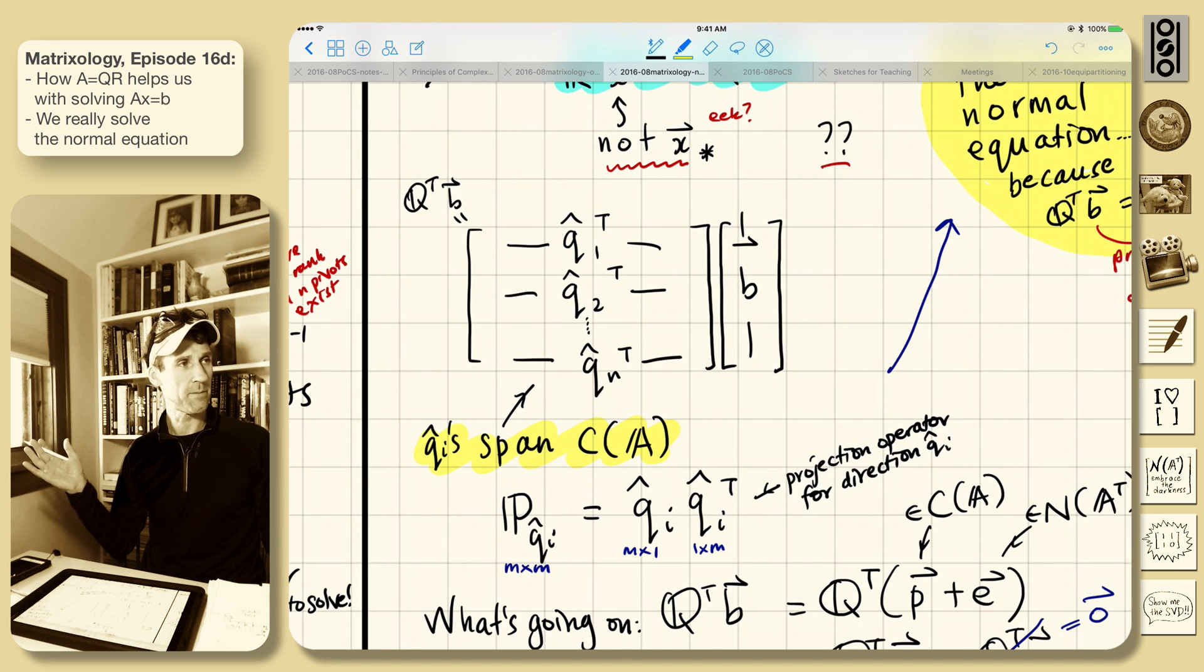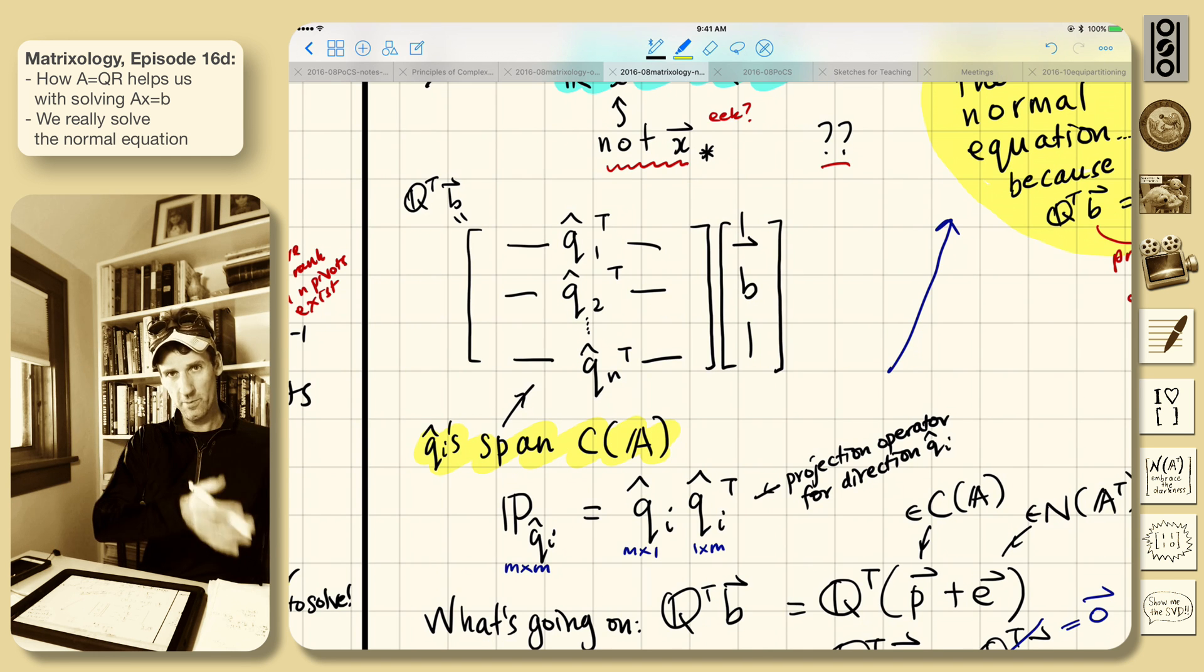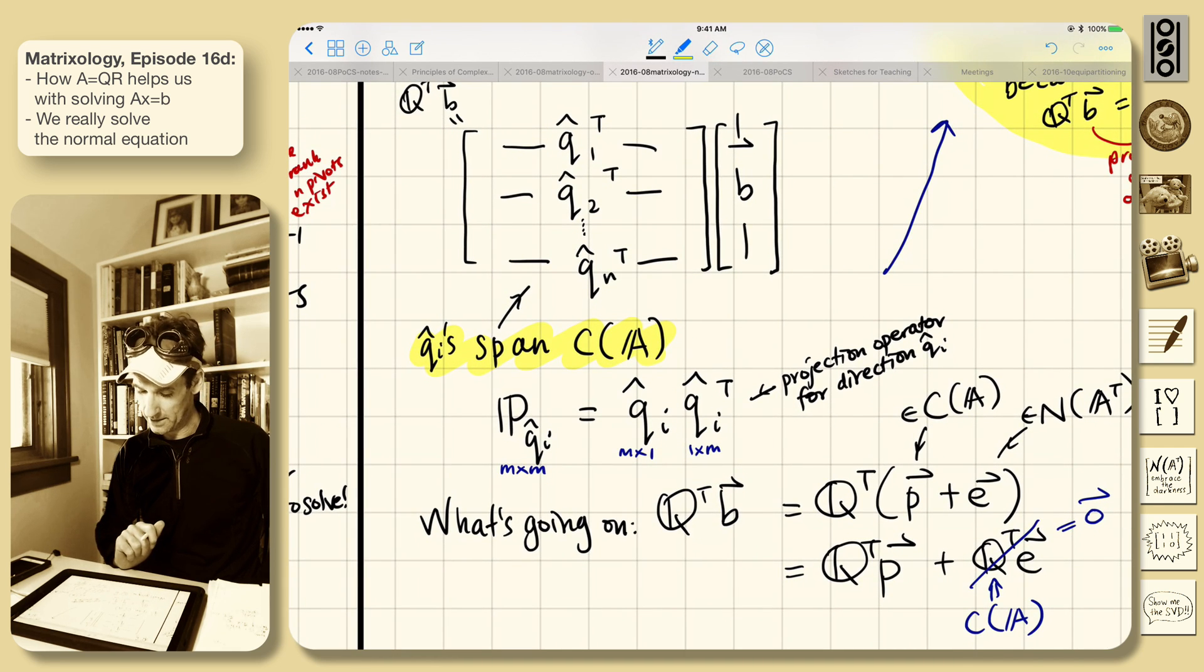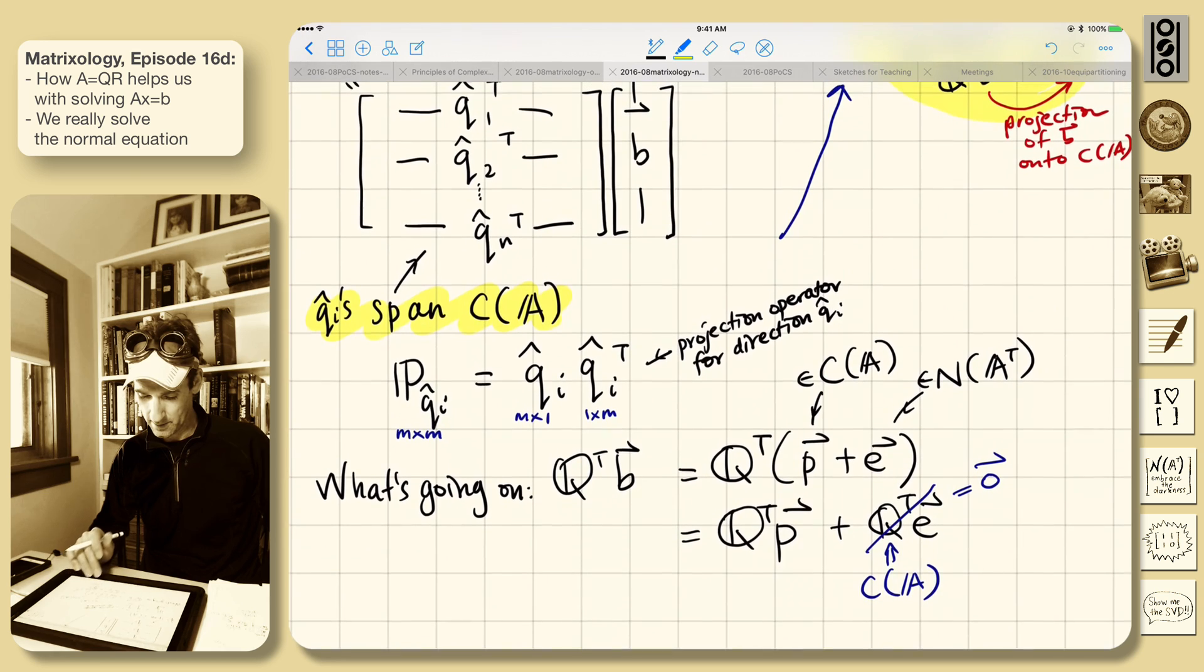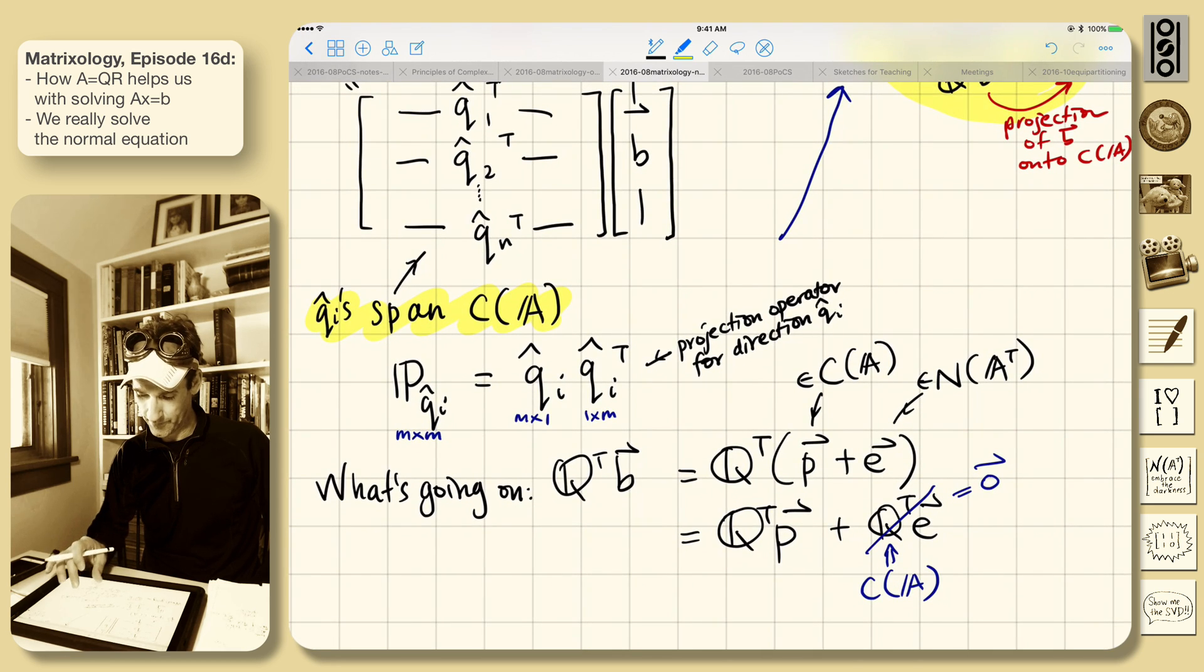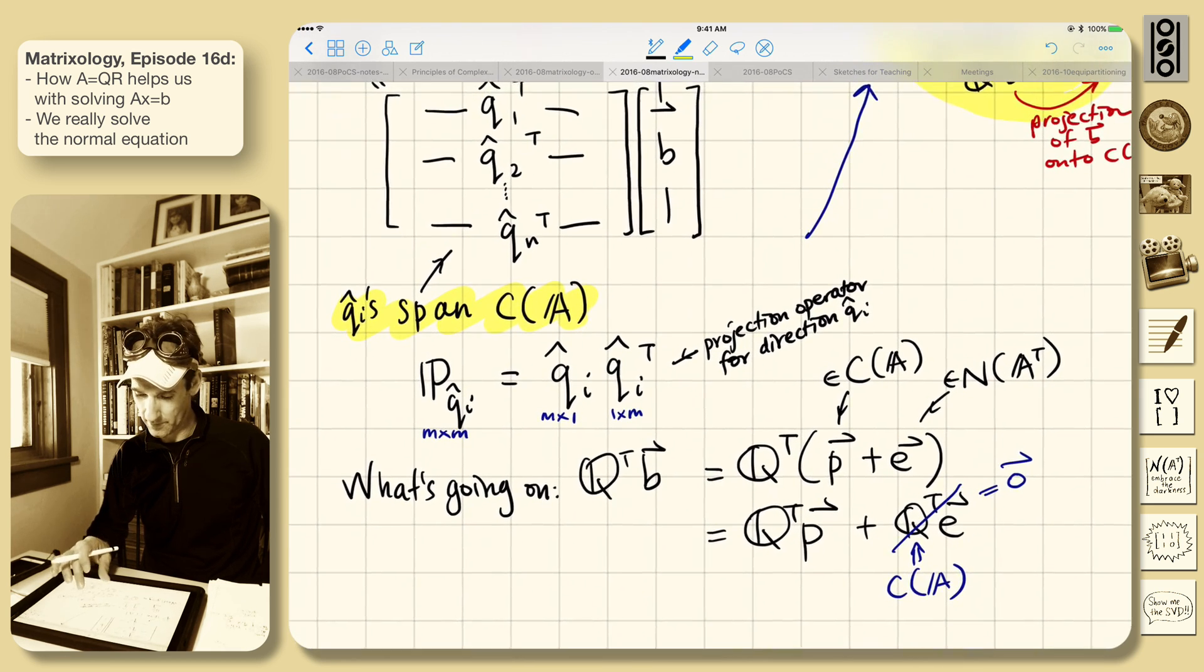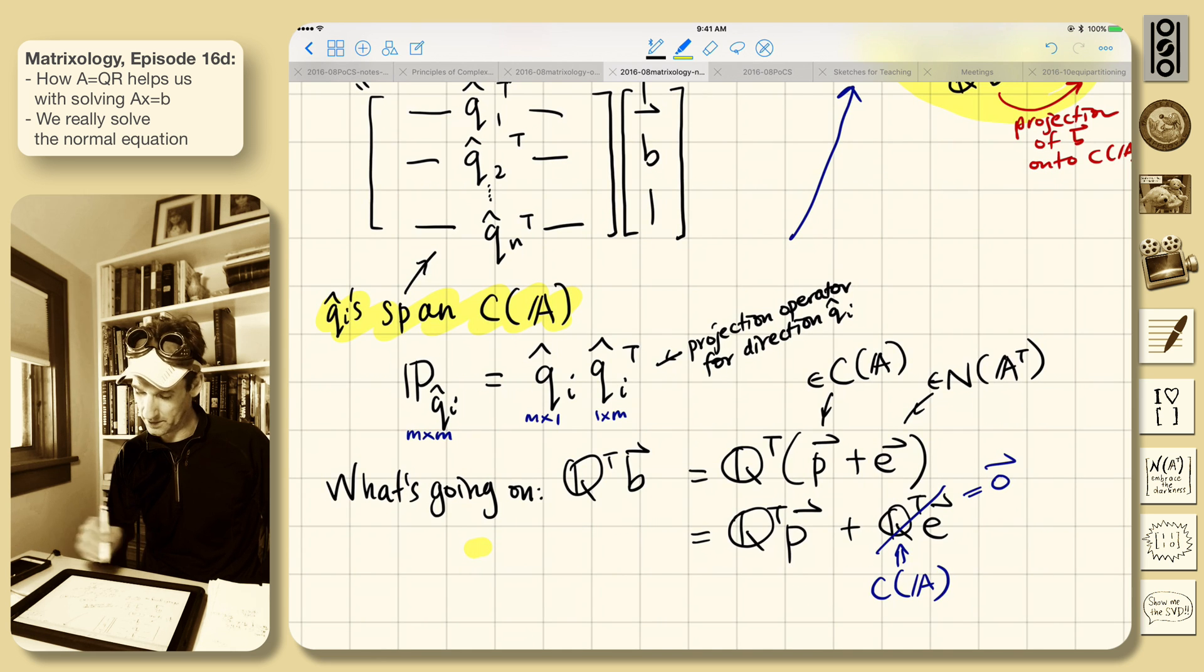It's another, we had the A's, they span the column space of A, and then we made this new basis. It's very nice, it's an orthogonal basis for the column space of A. And so what's going on is this, let's do it like this. So we've got Q transpose B.